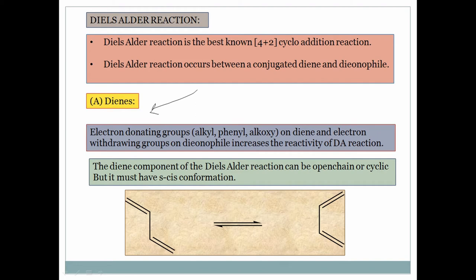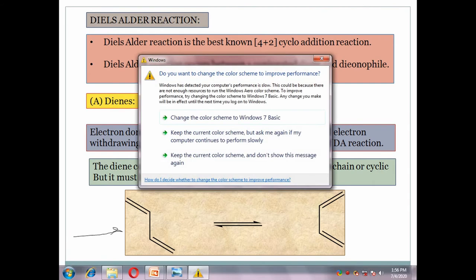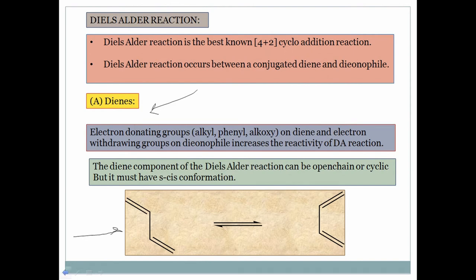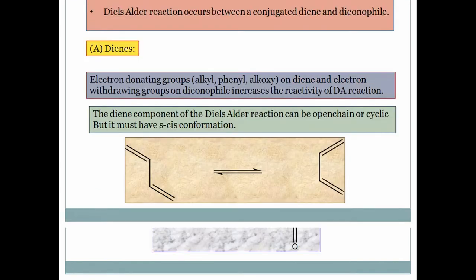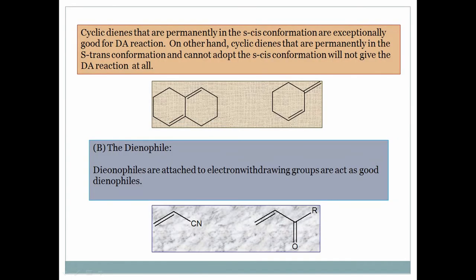For the diene, if you take 1,3-butadiene there are two possible conformations: s-trans and s-cis. The reaction proceeds through the s-cis conformation. At room temperature, s-trans 1,3-butadiene converts to s-cis 1,3-butadiene and the reaction takes place. When the cyclic diene is locked in s-cis conformation the reaction goes very well; when the diene is locked in s-trans conformation, the reaction is not possible at all.